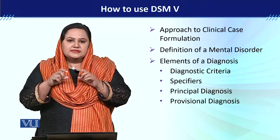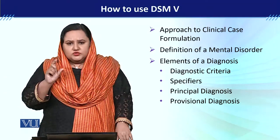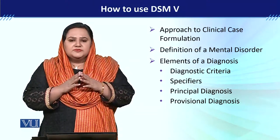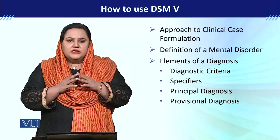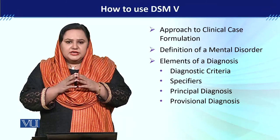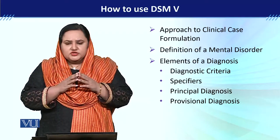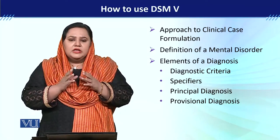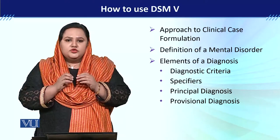Along with the diagnosis, there are different specifiers. A specifier means you need to explain whether there is any subtype of that disorder, what its course is, and its intensity. For example, if a child has conduct disorder, the specifier or subtype must be explained — whether it is the childhood onset type or the adolescent onset type. We need to specify that.